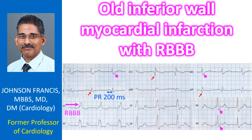The unusual features about this ECG are the association of RBBB with inferior wall infarction, and the QRS width of 160 ms, which is rather uncommon in RBBB, though it is more likely in left bundle branch block.